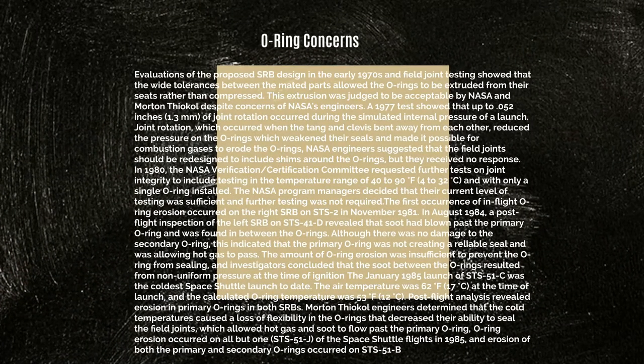Regarding O-ring concerns: evaluations of the proposed SRB design in the early 1970s and field joint testing showed that the wide tolerances between mated parts allowed the O-rings to be extruded from their seats rather than compressed. This extrusion was judged acceptable by NASA and Morton Thiokol despite concerns from NASA's engineers. In 1977, tests showed that up to 0.052 inches (1.3 millimeters) of joint rotation occurred during simulated internal launch pressure. Joint rotation — which occurs when the tang and clevis bent away from each other — reduced the pressure on the O-rings, weakened their seals, and made it possible for combustion gases to erode the O-rings.